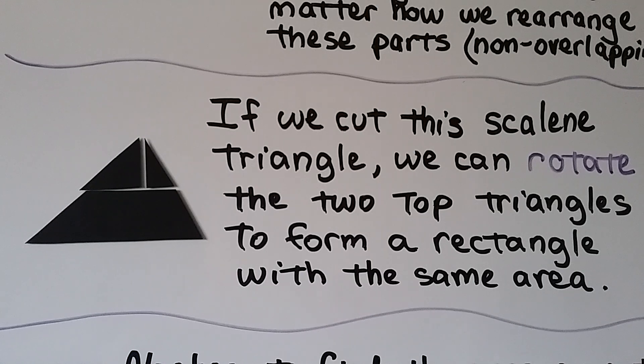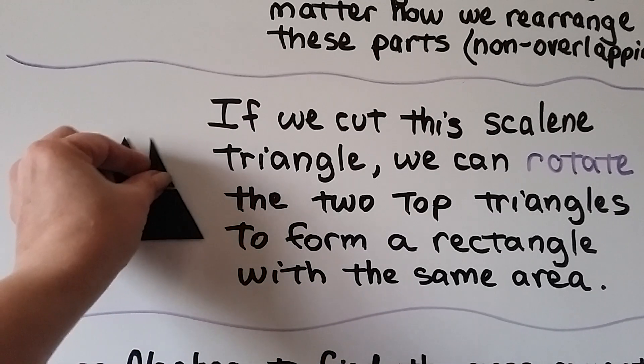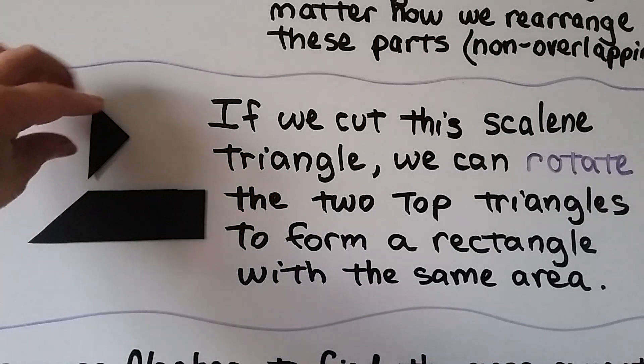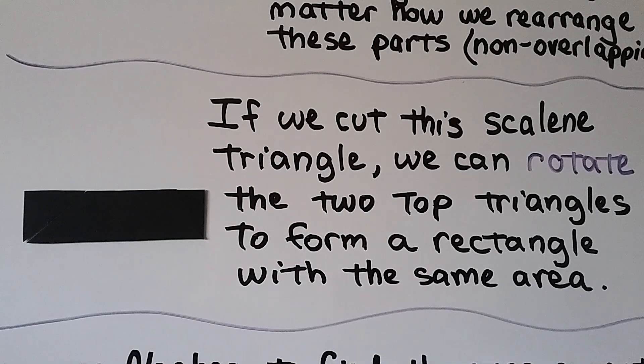If we cut this scaling triangle into three pieces, we can rotate the two top triangles to form a rectangle with the same area. So I can take this little piece and just rotate it around like that. And I can take this piece and I can rotate it around like that. Same area as the triangle.